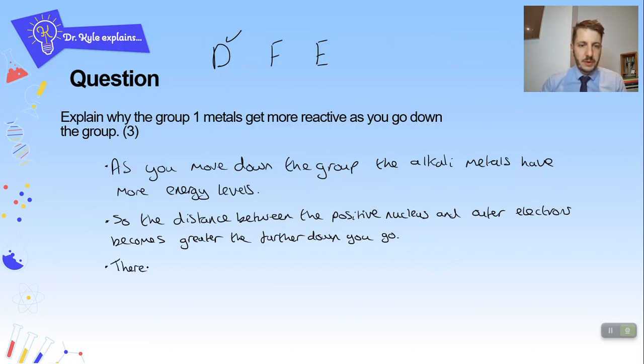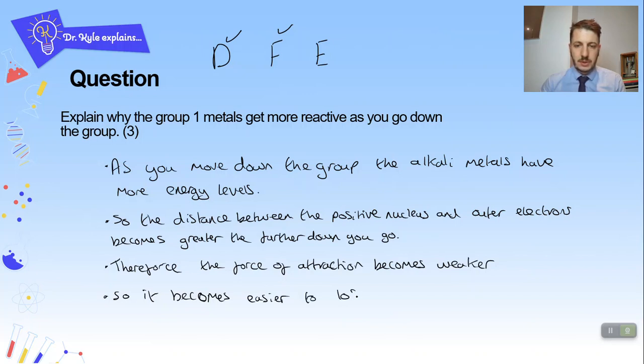Therefore let's think about what happens to the force of attraction. Therefore the force of attraction becomes weaker. So it becomes easier to lose an electron. So if you keep this strategy in place for explaining why the Group metals become more reactive as you go down I'm absolutely certain you will hit top marks in your GCSE.